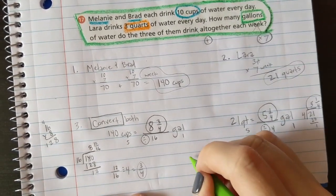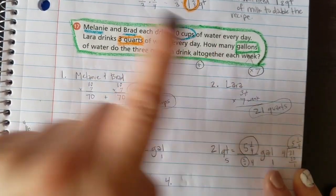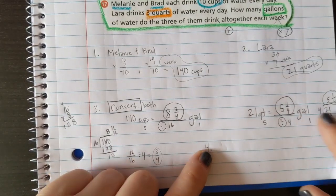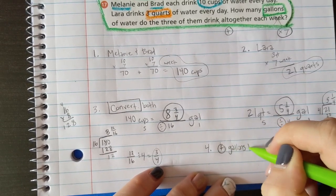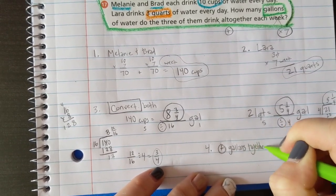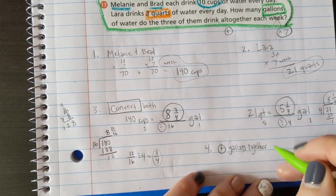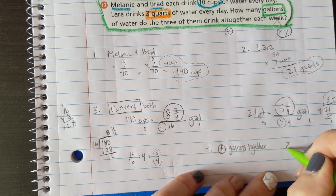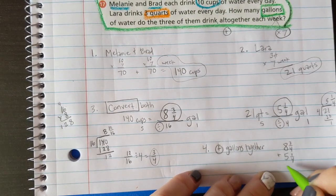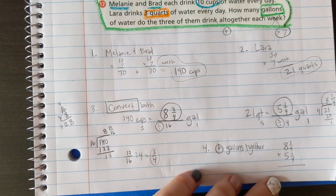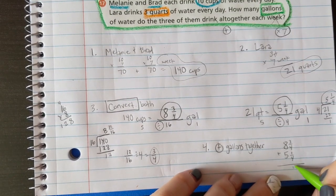Step 4, after I found Melanie and Brad, I found Laura, then I did both conversions. And step 4 is to add the gallons together. Add gallons together: 5 and 1/4 and 8 and 3/4. Oh, you look at that, they have the same denominator. That's so lucky. 8 and 3/4, 5 and 1/4. Oh, that's gonna be beautiful. 3/4 plus 1/4 is 4/4, or a whole, right? But I'll just write 4/4.